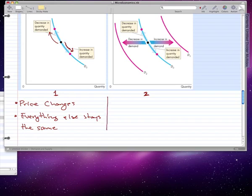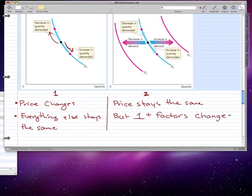Now, the shift in the demand curve is the complete opposite. It is when price stays the same. But one or more factor changes or influences the buyer's plans.